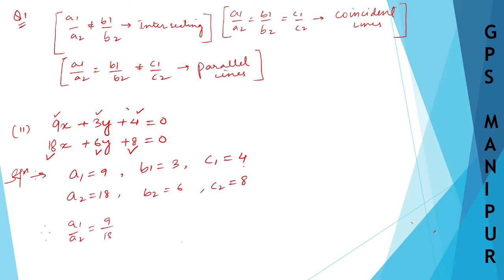Therefore, a1 by a2 is equal to 9 by 18, which will be 1 by 2. Next, b1 by b2 will be equal to 3 by 6, which will be 1 by 2 again.